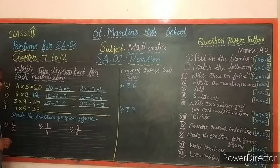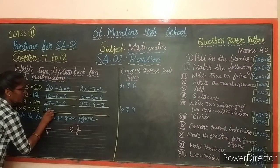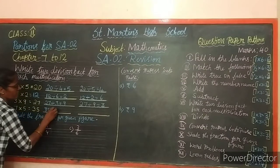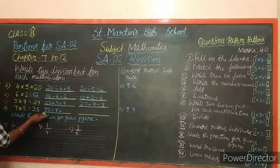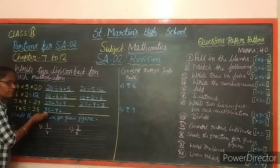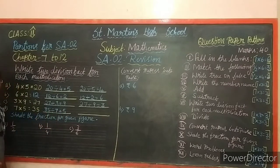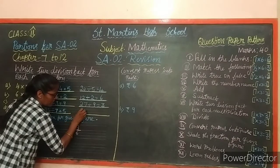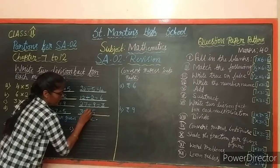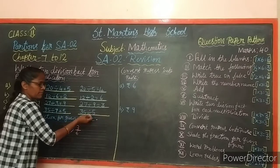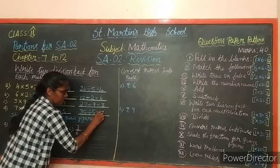Next: 7 fives are 35. First division fact: 35 divided by 7 - using 7 times table, 7 fives are 35, quotient is 5. Second division fact: 35 divided by 5 - using 5 times table, 5 sevens are 35, quotient is 7.